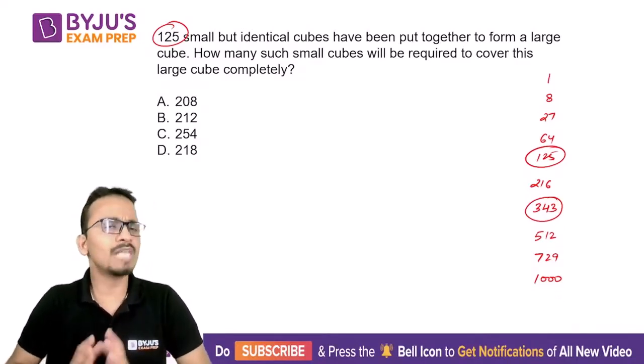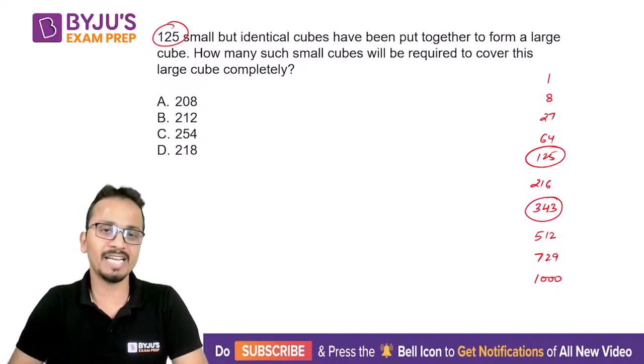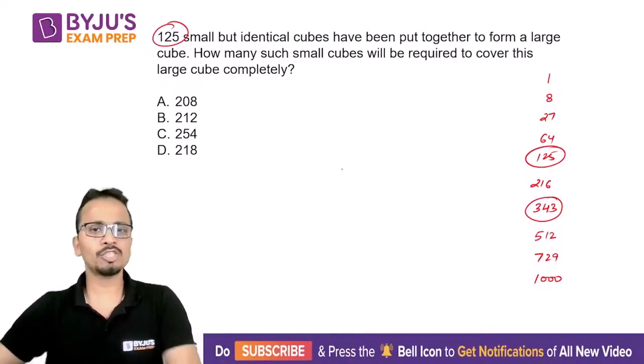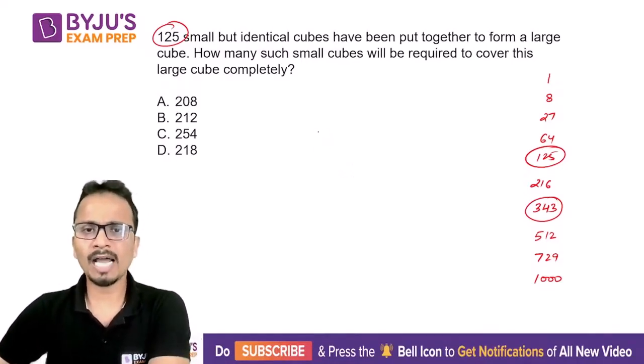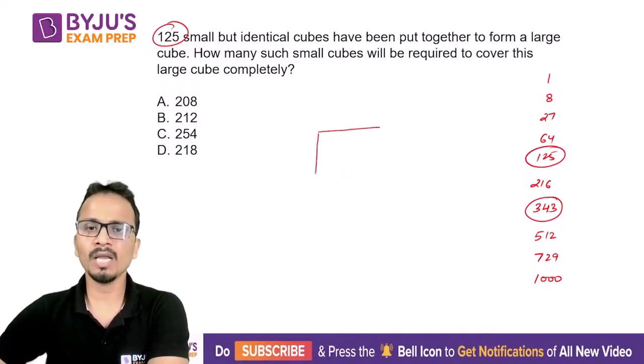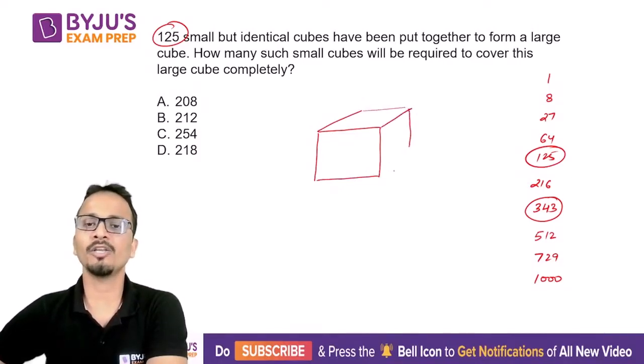So 11³, 12³ is 1728—like this you need to remember cubes up till 15. That will be very handy. Now let's talk about this question. I have a bigger cube which is made by joining or arranging 125 smaller and identical cubes.